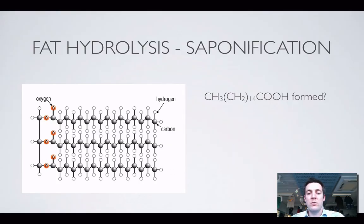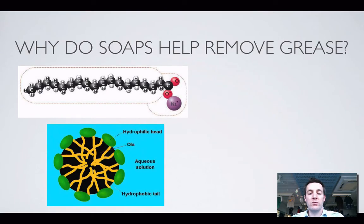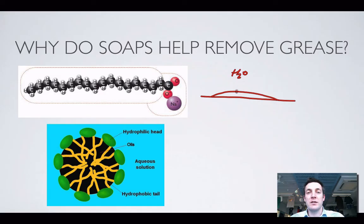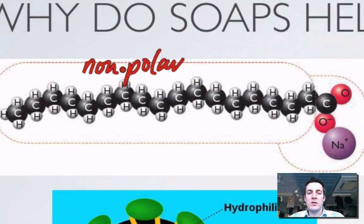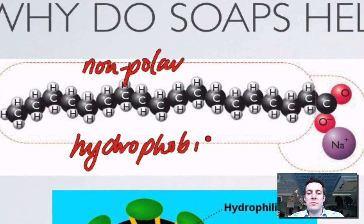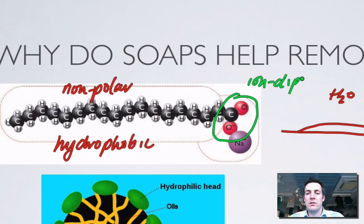Why should it work as a soap? Let's look at the structure and how it might interact with water and grease. Grease doesn't like mixing with water because water is very polar and grease is non-polar, so there are no significant intermolecular interactions between them. But our soap molecule — the salt of a fatty acid — has a non-polar tail, which is hydrophobic and hates dissolving in water, and at the same time an ionic part that can form very strong ion-dipole forces with water, making it hydrophilic.